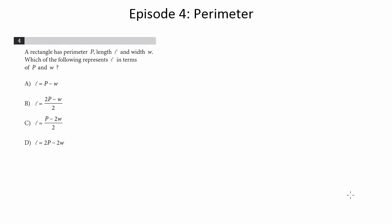A rectangle has perimeter p, length l, and width w. Which of the following represents l in terms of p and w?